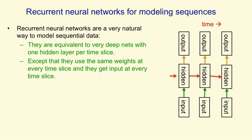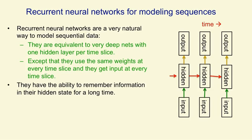One way in which they differ from feed-forward nets is that we use the same weights at every time step. So if you look at those red arrows where the hidden units are determining the next state of the hidden units, the weight matrix depicted by each red arrow is the same at each time step. They also get inputs at every time step and often give outputs at every time step, and those all use the same weight matrices too.